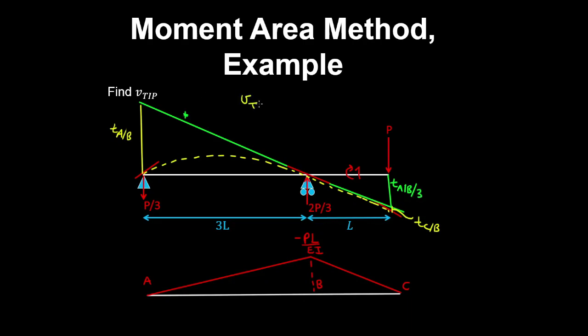And therefore the tip deflection is equal to the tangent at A relative to B on 3, plus the tangent at C relative to B. And because the curvature diagram is piecewise linear, we can use a geometric definition of the tangent.